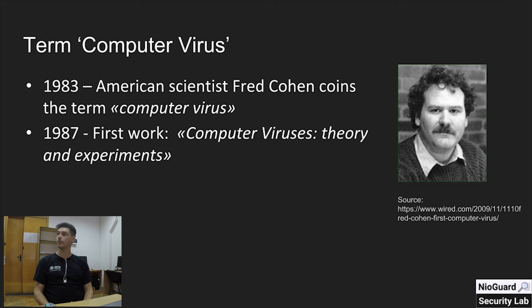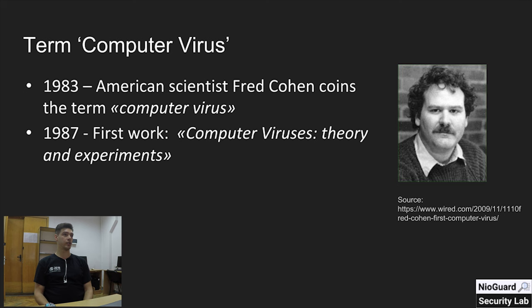The term 'computer virus' was coined by Fred Cohen in 1983. It was first mentioned in his research work, his PhD thesis, called 'Computer Viruses: Theory and Experiments,' published in 1987. Fred Cohen credited the authorship of the term to Leonard Adelman, who was his scientific supervisor and a co-author of the RSA asymmetric cipher, invented in 1977 together with Rivest, Shamir, and Adelman.